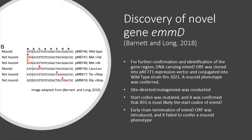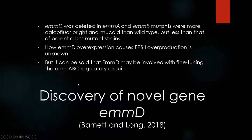Next, site-directed mutagenesis was conducted. First, the start codon was mutated to GTG and ATA, and both did not yield a mucoid phenotype. Therefore, it was confirmed that ATG is most likely the start codon of EMMD. After that, early chain termination was introduced to the EMMD ORF; however, these mutations also did not yield a mucoid phenotype. EMMD was then deleted in EMMA and EMMB mutants used previously. They were found to be more calcofluor-bright and mucoid than the wild-type, but less than their parent EMM mutant strains. How EMMD overexpression causes EPS1 overproduction is still unknown and is just recently being discovered.